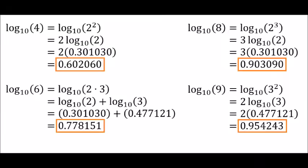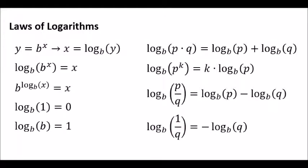The numbers four, six, eight and nine are all composite. They can be made by various multiples of two and three. We already found log two and log three, so it's a simple matter of employing the laws of logarithms. Here's a reminder of the laws of logarithms.